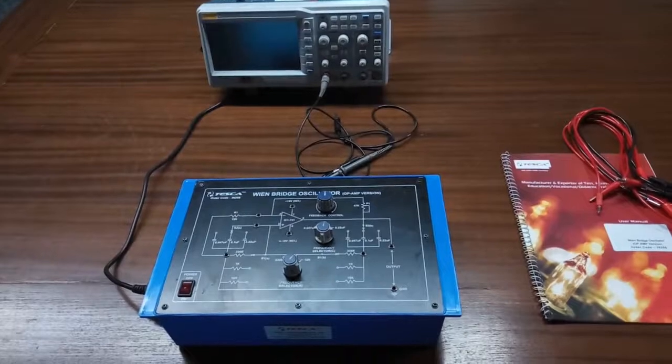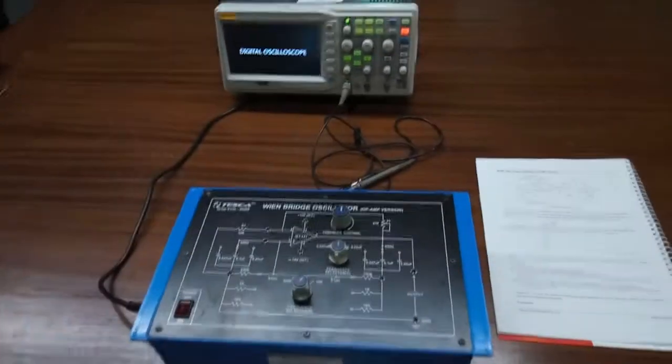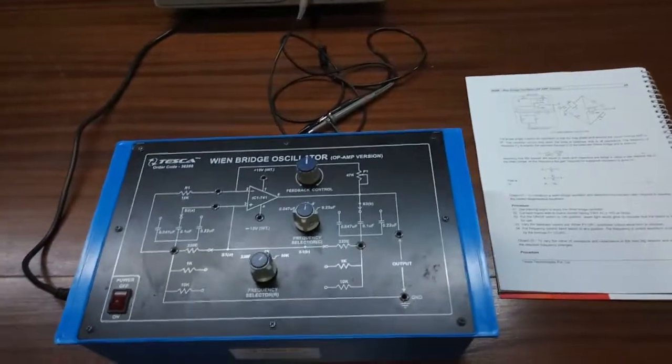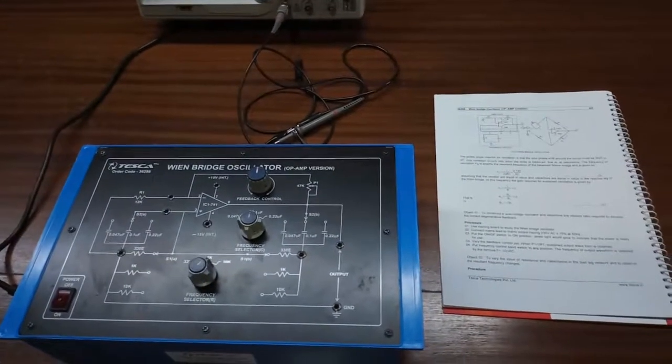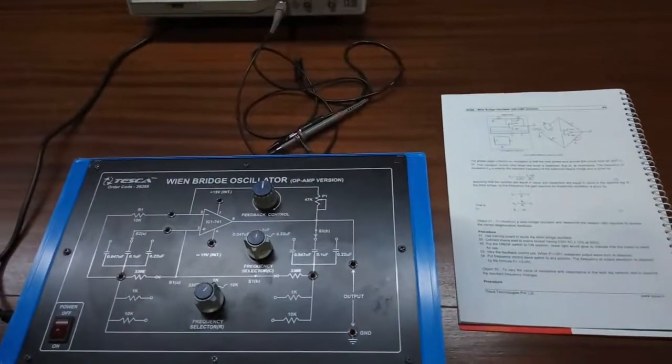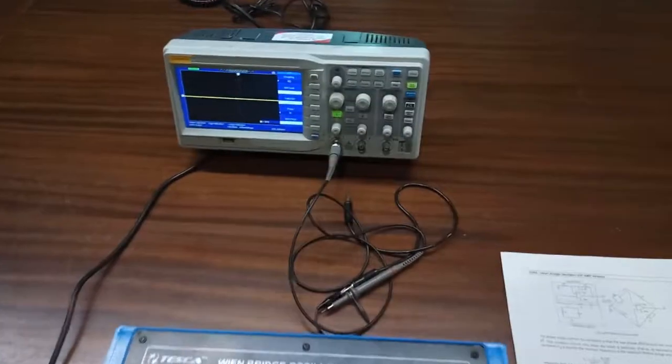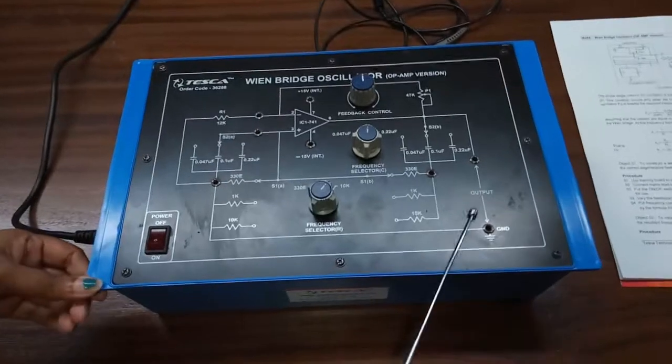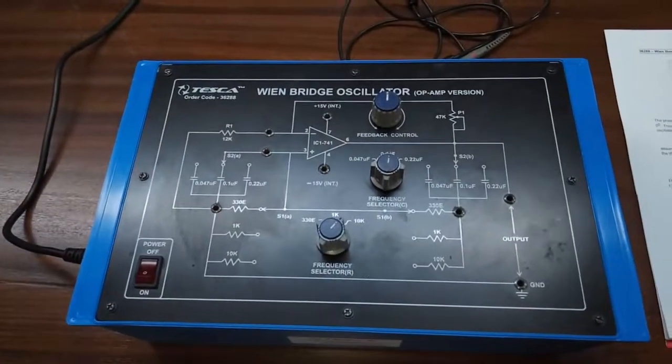We will need an oscilloscope. Our first experiment is to construct a Wien Bridge Oscillator and determine the resistor ratio required to develop the current degenerative feedback. The circuit is already built into this trainer kit, so you will just observe the output across these two terminals.